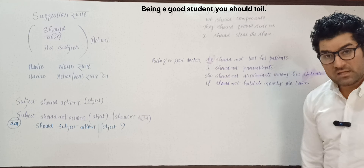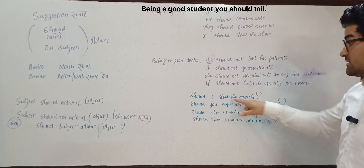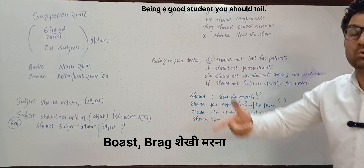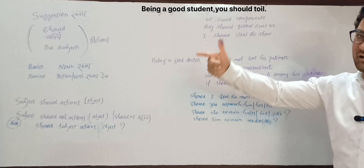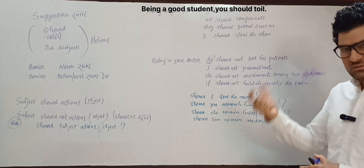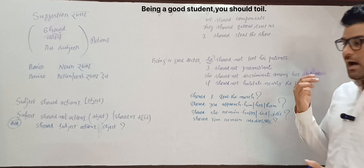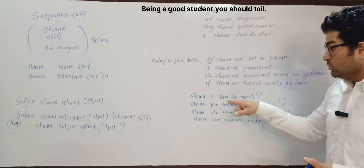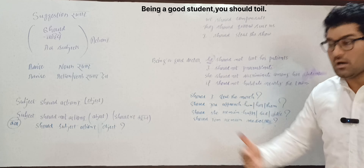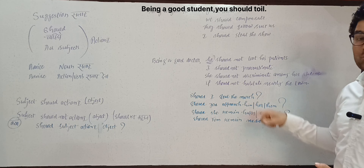Here are examples of questions using 'should.' First: 'Should I steal the march?' — steal the march means to make progress secretly without announcing it, unlike people who boast or brag about everything. Some people are dark horses who quietly make progress — that's called stealing the march. Second: 'Should you approach him, her, or them?' — approach here means to interact or have a conversation with someone.